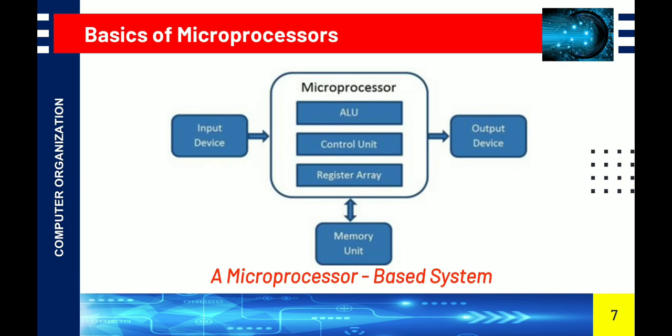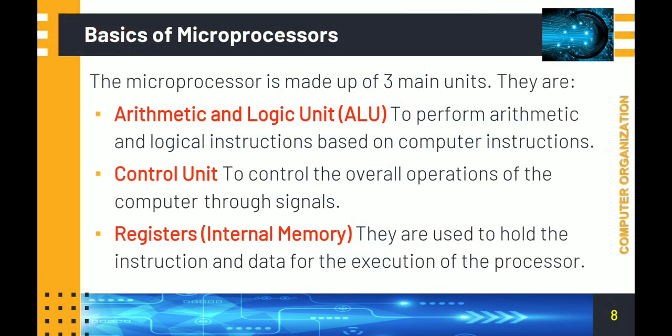The microprocessor is made up of three main parts: one, the Arithmetic Logic Unit (ALU); two, the Control Unit (CU); and three, registers or internal memory. These are the three units of the microprocessor.